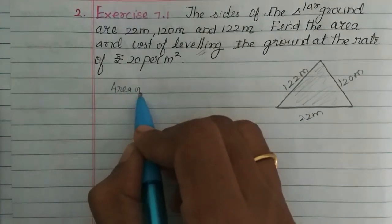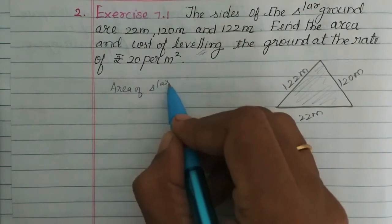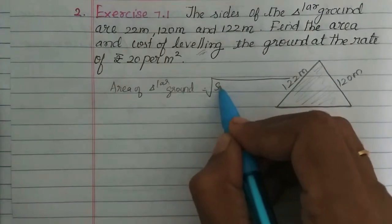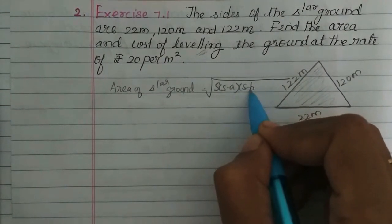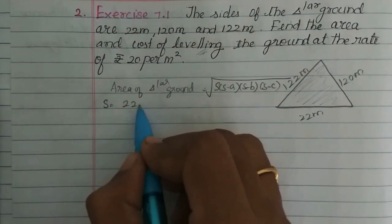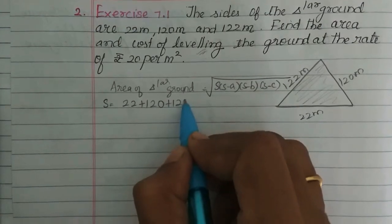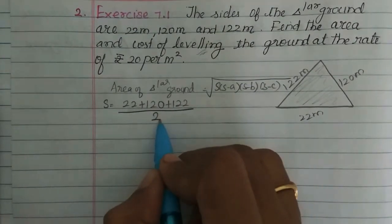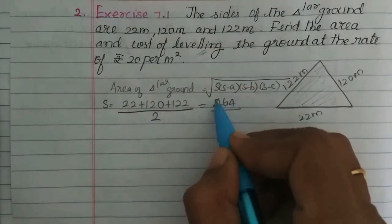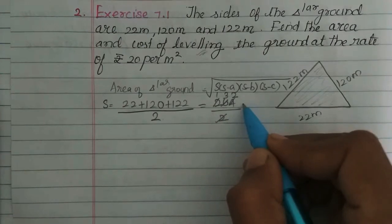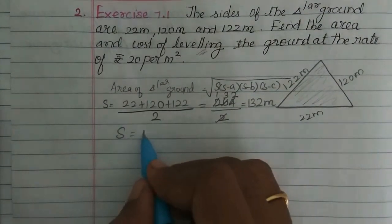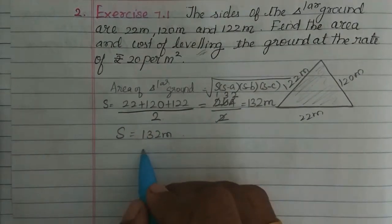Area of the triangular ground equals root of s(s-a)(s-b)(s-c). The semi-perimeter s equals (22+120+122)/2 = 264/2. So s equals 132 meters.